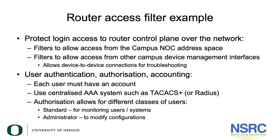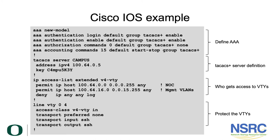The slide shows a Cisco IOS example — a working example from a campus network. The first section defines the AAA configuration. We've defined what the TACACS+ server is. There's a single example shown here for space, but this actual campus has two operating TACACS+ servers, so if one disappears the other provides backup.